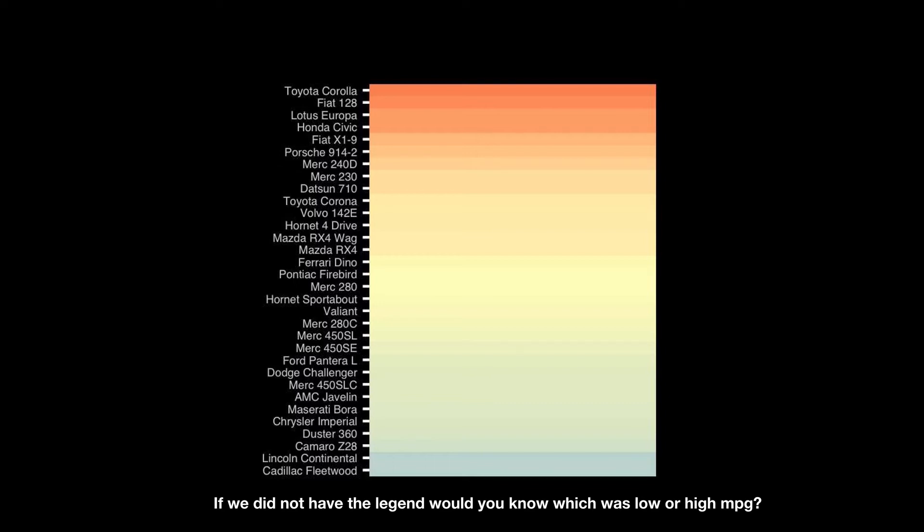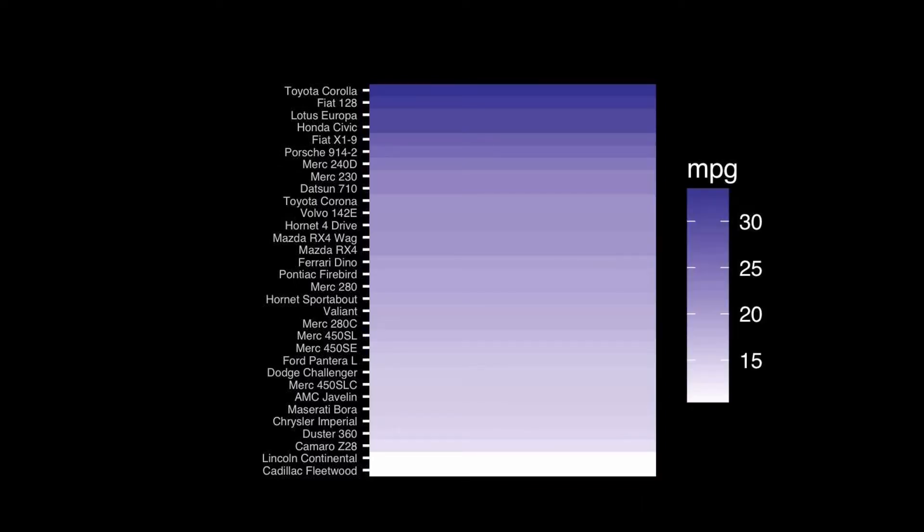There's nothing intrinsically linked between orange and low fuel consumption. Rather, I should use different saturation values of a single color or hue. Then if I have more of the color, I'll have more of the numeric thing I'm actually plotting. Here we're being kinder to our viewer and not requiring them to do so much work.